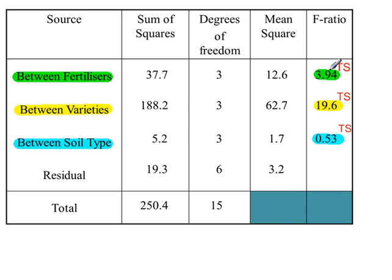And then these test statistic values. So to get 3.94 we're dividing these two. To get 19.6 we're dividing these two. To get 0.53 we're dividing these two.